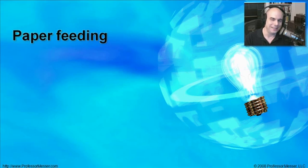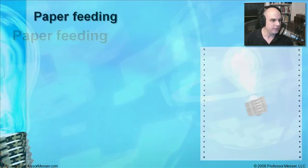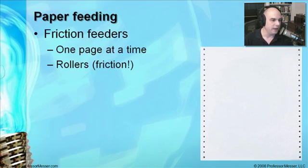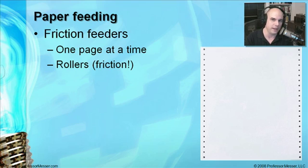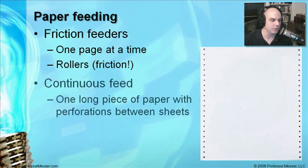With both printers and scanners, there's a need to get paper into the device — whether it's a page to scan or a blank page to print on. One very common way is through a friction feeder, which uses rollers on the side of your printer or scanner to pull pages in one at a time. In preventive maintenance, one thing they always ask you to do is clean those rollers, because the cleaner they are, the easier they'll grip the paper and pull it in.